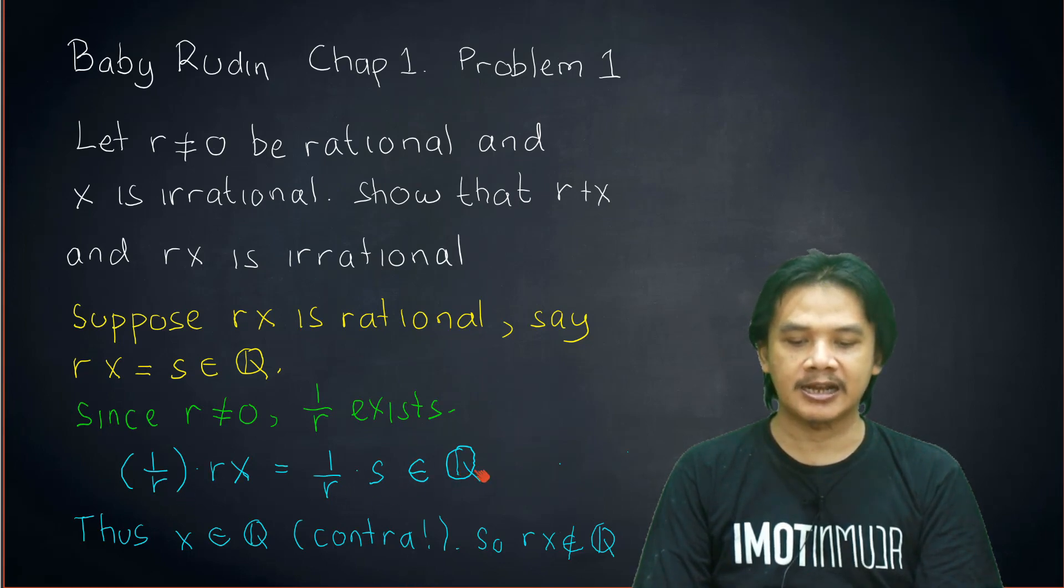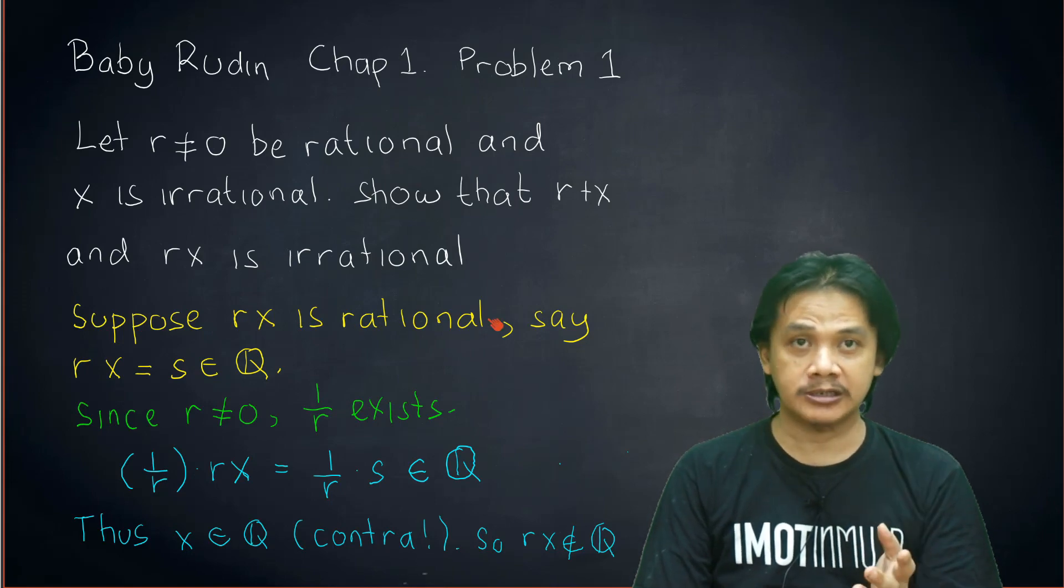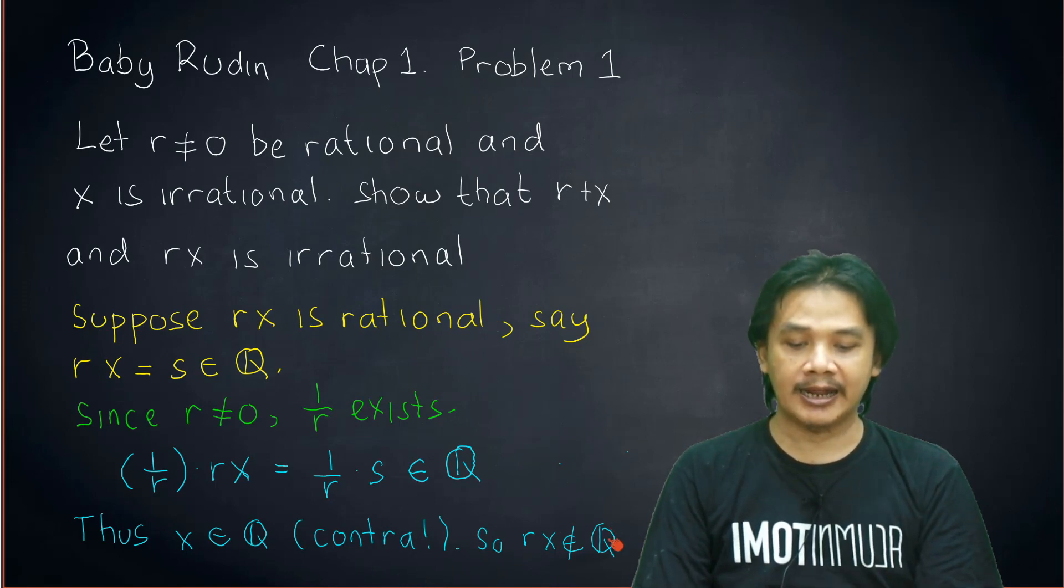So if we read from the left to the right, the left-hand side is equal to x. Meanwhile, the right-hand side is an element of ℚ. Therefore, x is in ℚ. And that's a contradiction since x is irrational. So therefore, the supposition that r×x is rational must be false. Therefore, r×x has to be irrational.